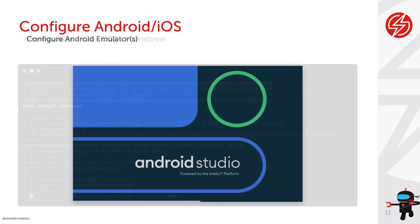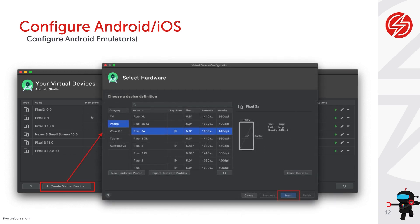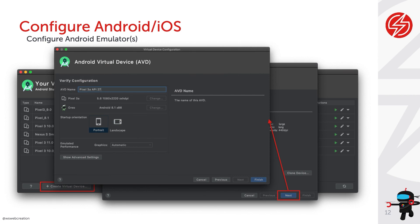Now let's get back to Android Studio to create an emulator. Go to Tools, then to the Android Virtual Device Manager (AVD Manager), and click 'Create Virtual Device.' You'll select the hardware — in this case we select the Pixel 3a. Then verify your configuration: choose the Android version, give your emulator a name. If the version you need isn't listed, you can download other versions. Click Finish and your emulator will be added to the overview.